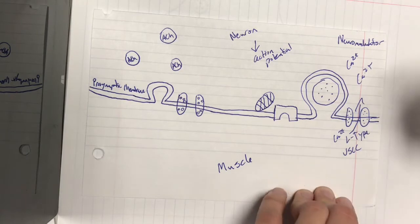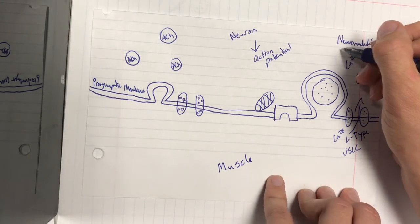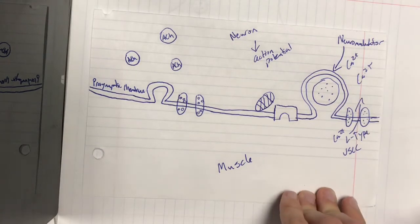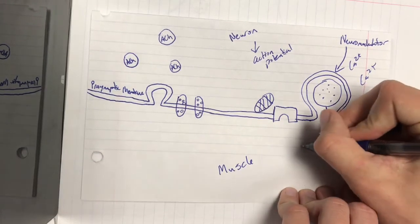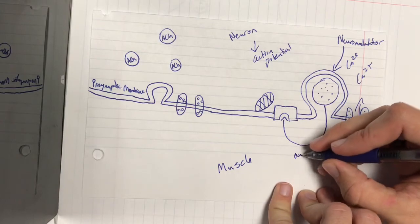As they're rushing in that positive change in inside of the neuron causes a neuromodulator which is a signaling molecule to fuse to the membrane and be released. It comes around and binds. This is a type of autocrine signaling.